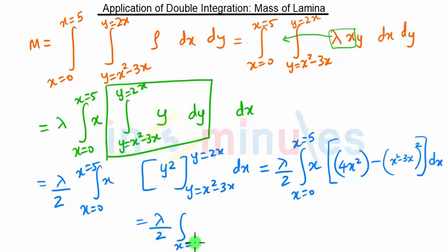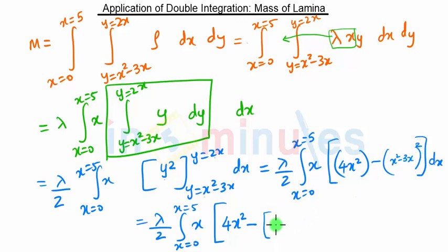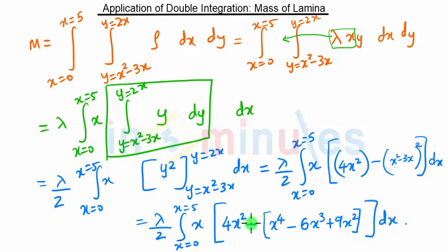So the expression becomes lambda/2 times the integral from x = 0 to 5 of: 4x² minus the expansion of (x² - 3x)², which gives x⁴ - 6x³ + 9x². Taking the negative sign inside, the integrand becomes: 4x² - x⁴ + 6x³ - 9x², simplifying to -x⁴ + 6x³ - 5x² dx.